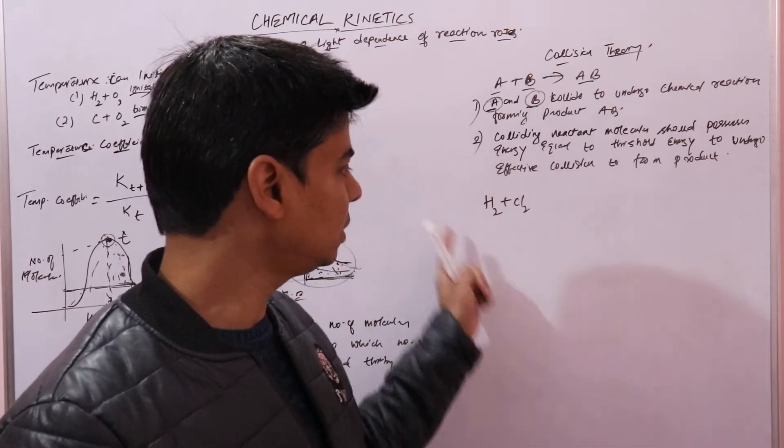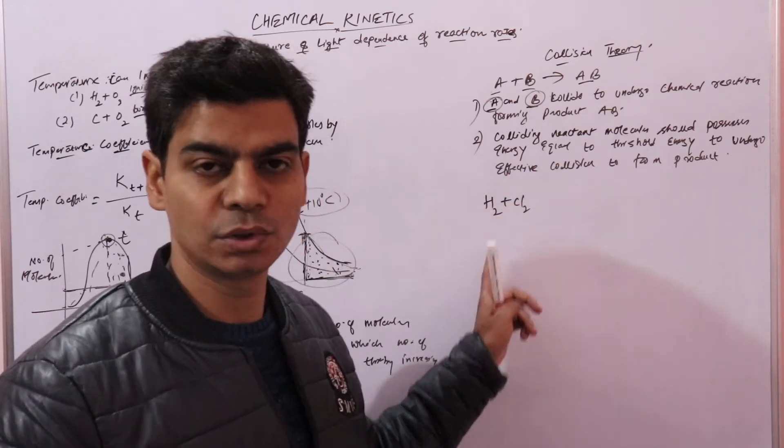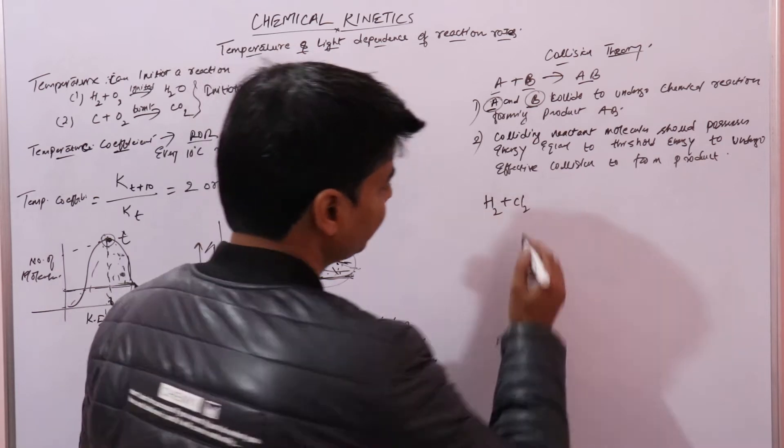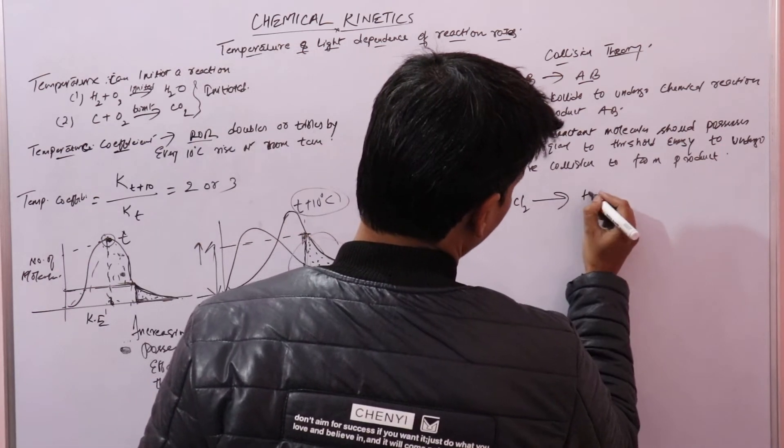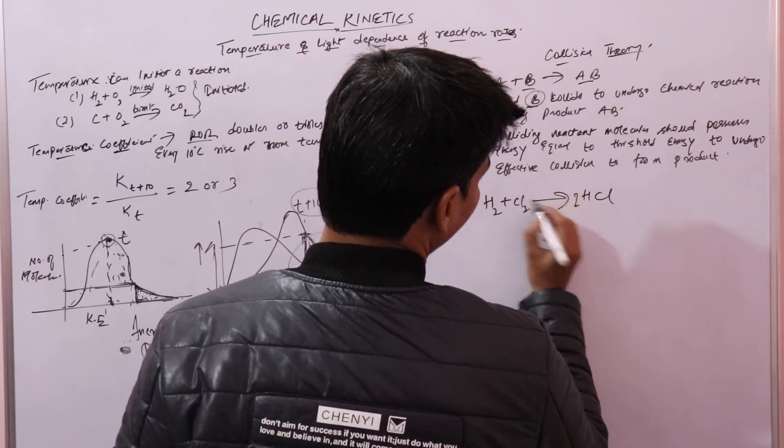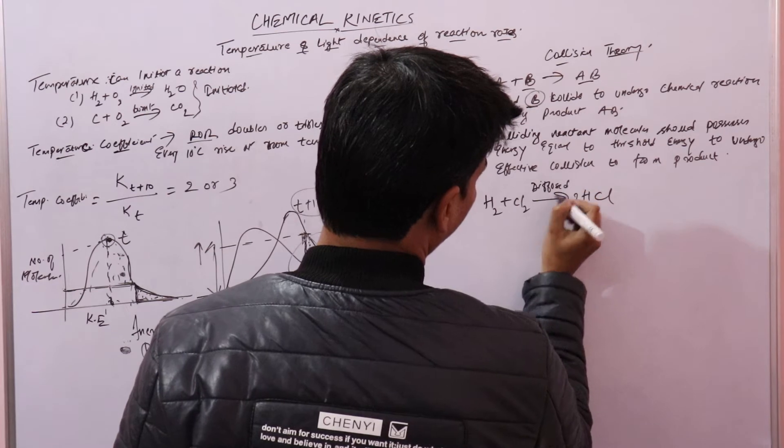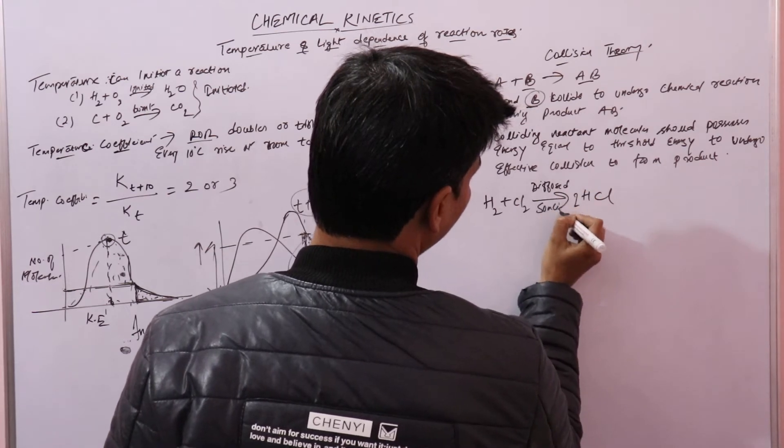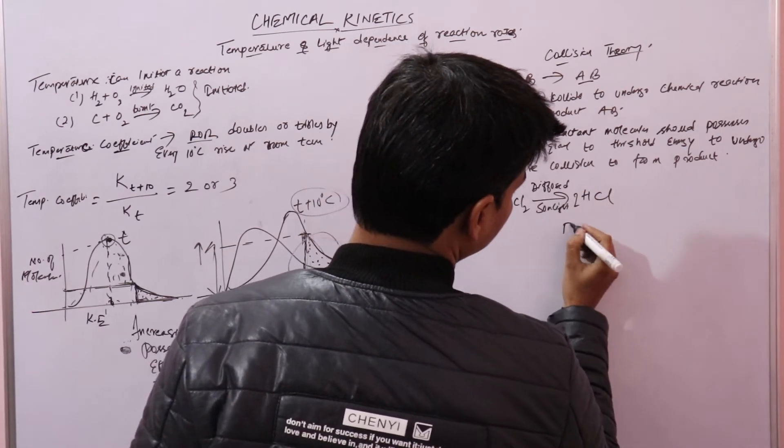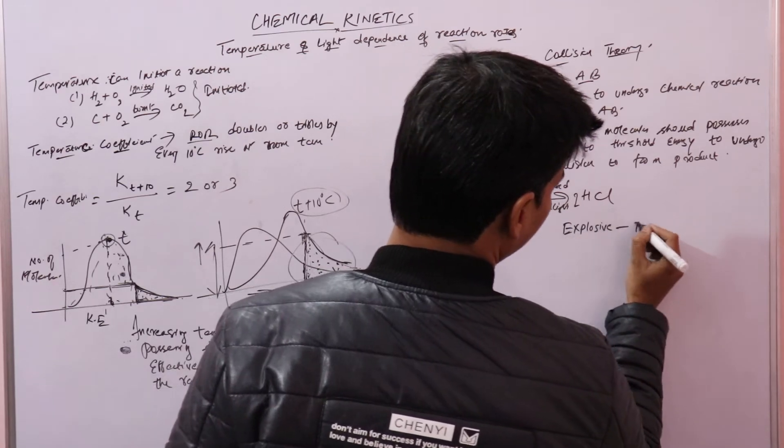That means this light is doing something that is increasing the rate of reaction between hydrogen and chlorine, or it lets hydrogen and chlorine react. So hydrogen and chlorine react to form HCl in the presence of diffused sunlight, and the reaction is explosive in direct sunlight.